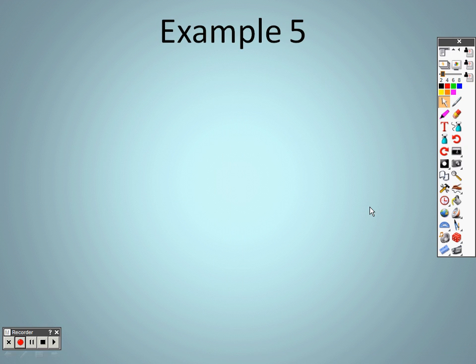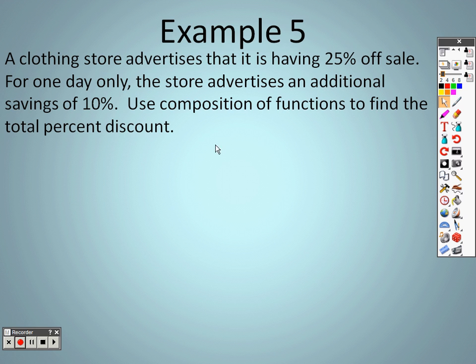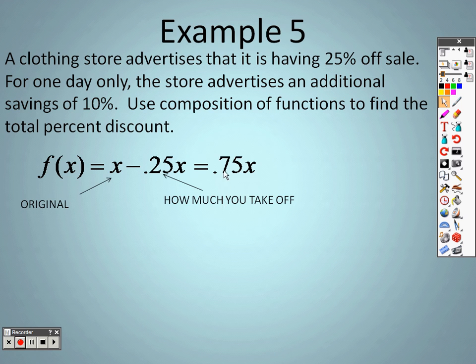Taking a look here quick at example 5, a clothing store advertises that it has 25% off sale. For only one day, the store advertises an additional savings of 10%. So we're going to use composition to find the total discount. So the first one says that you have an item, and it's 25% off, so I'm taking 25% off of it. So 100% of the item minus 25% of the item is 75% of that item.